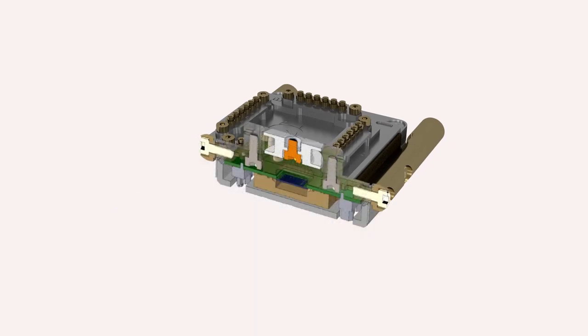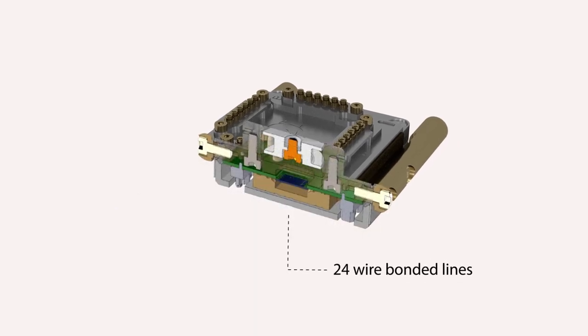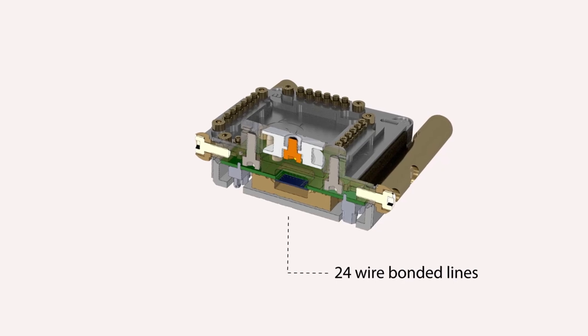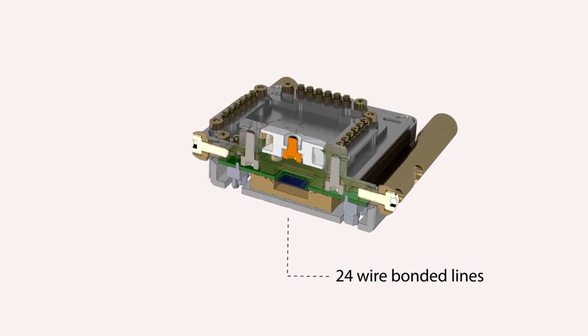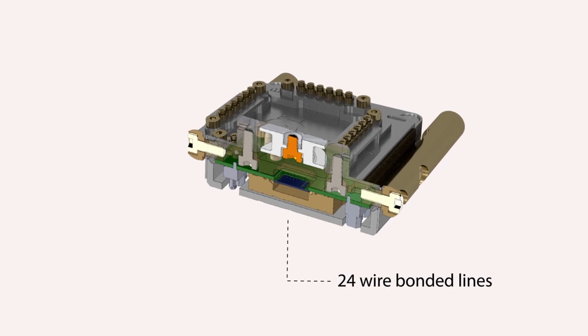the Qcage Point 24, features 24 coaxial transmission lines that have been optimized to transmit control and readout signals at frequencies all the way to 18 GHz.